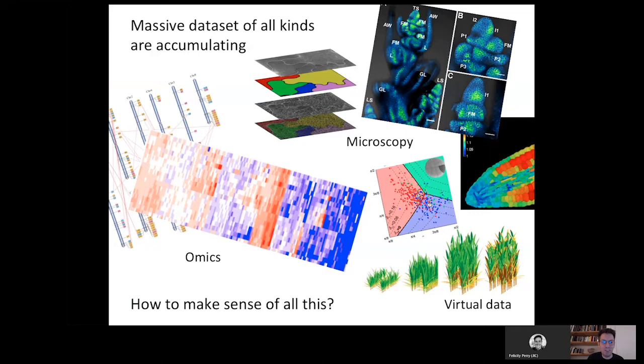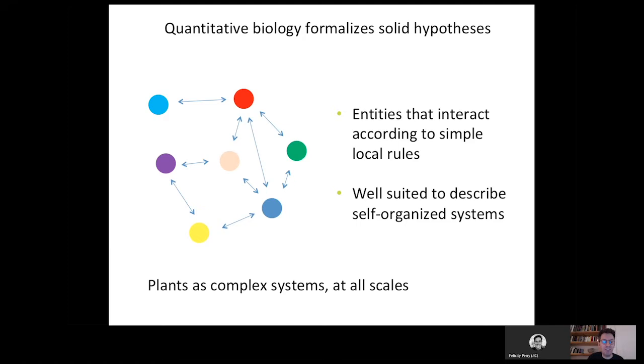This is really timely because we are generating a lot of data — in omics, in microscopy and imaging, but also virtual data in models. We need to make sense of all this. The quantitative approach is one way to do so. And a subcategory of that approach is the complex systems approach — having a systemic view of the plant.